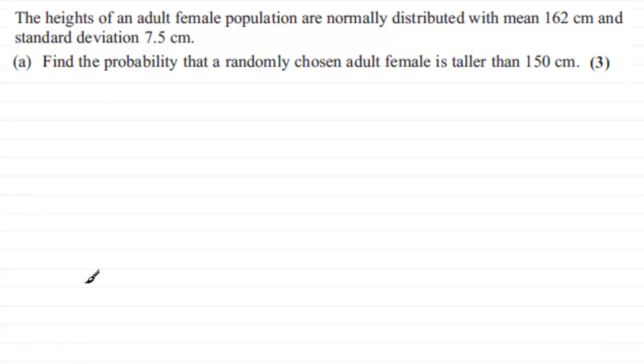So what we've got here is the heights of an adult female population are normally distributed with mean 162 centimeters and standard deviation 7.5 centimeters. And what we've got to do is find the probability that a randomly chosen adult female is taller than 150 centimeters.